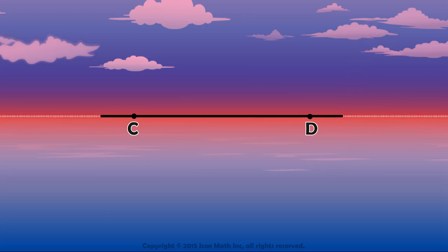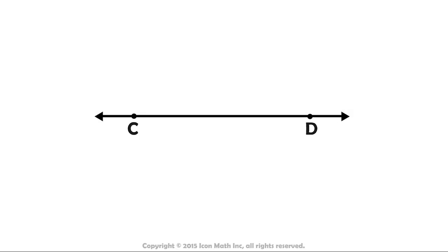But the horizon keeps going in both directions. So we draw an arrow before point C and another arrow after point D to show that this straight path doesn't end. We call this resulting shape a line.